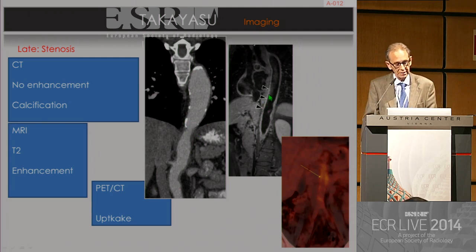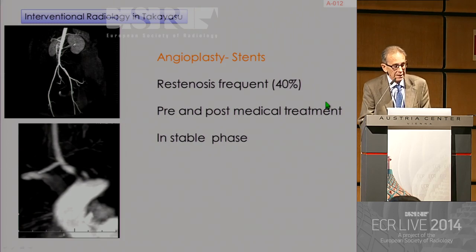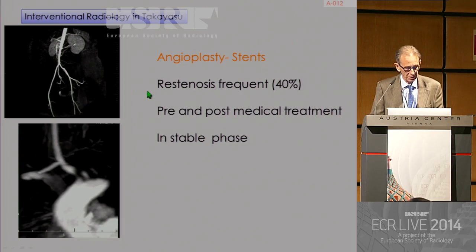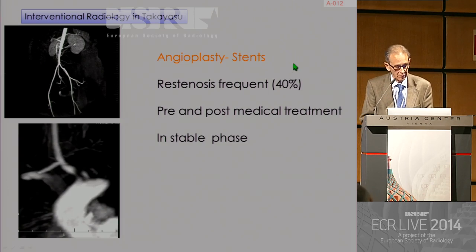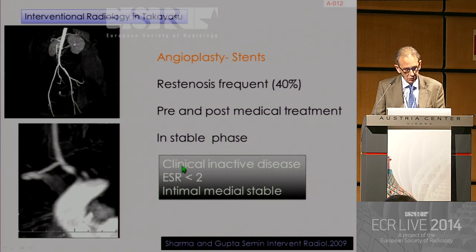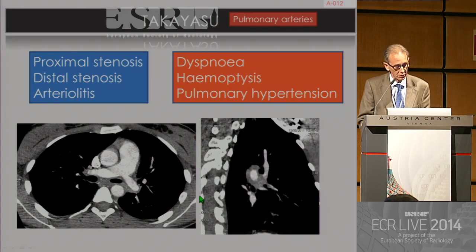Interventional radiology may be useful for Takayasu, especially when medical treatment doesn't work — angioplasty and stents are used for this purpose. The re-stenosis rate is frequent, around 40%. The recommendation is that if you are going to do a dilatation or place a stent, you should do it in a clinically inactive phase of the disease, with a low erythrocyte sedimentation rate and a stable intimal-medial complex. Those are the indications for this type of treatment.